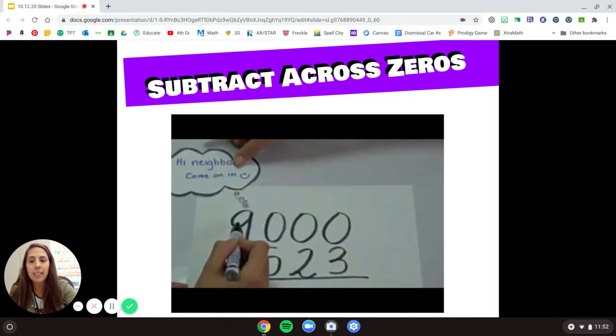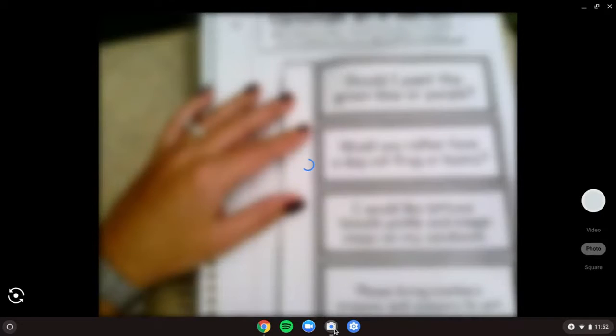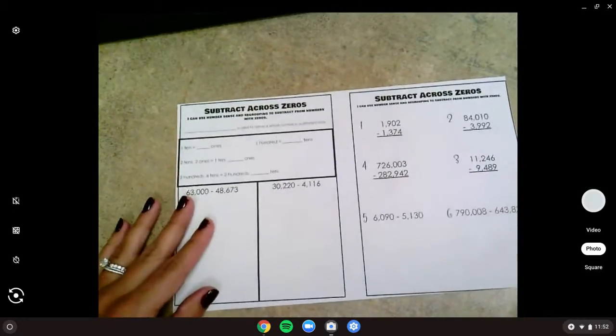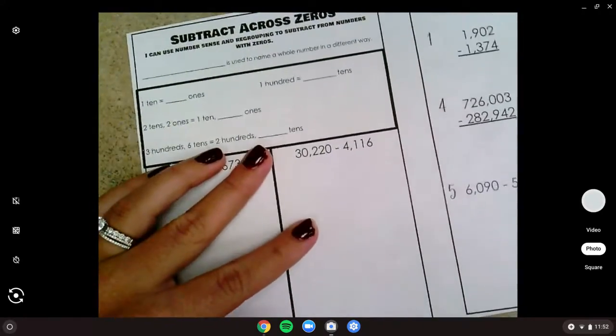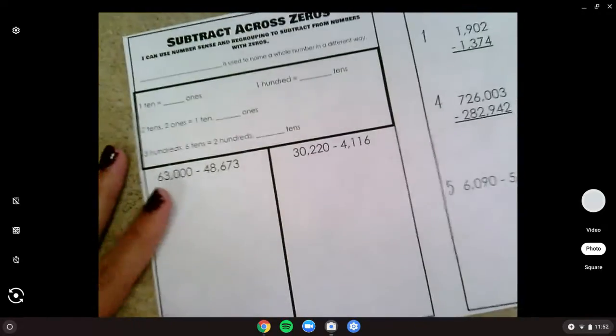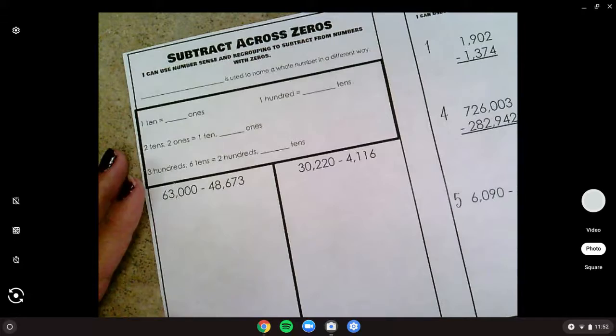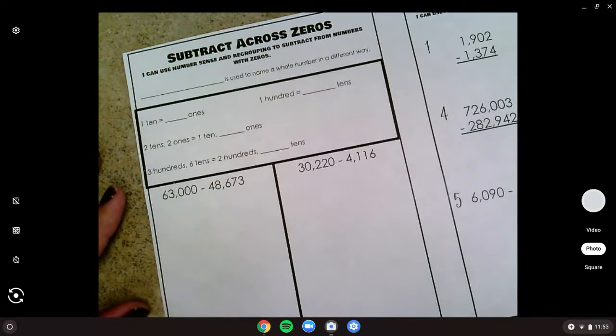So let's take a look at our notebook page. All right, so we've got subtracting across zeros. I'm going to zoom in on mine a little bit more. All right, so we're gonna start on this page and this page will be practice after. Okay, so we're going to use number sense and regrouping to subtract from numbers with zeros.